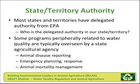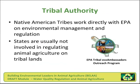Most states and territories have delegated authority. Some programs peripherally related to water quality are typically overseen by a state agricultural agency. Examples may include animal disease reporting, emergency planning and response, and animal mortality management — all of which may relate back to water quality. Regarding tribal authority, though located inside established states, Native American tribes primarily work directly with EPA on environmental management and regulatory issues, and states are usually not involved in regulating animal agriculture on tribal lands.